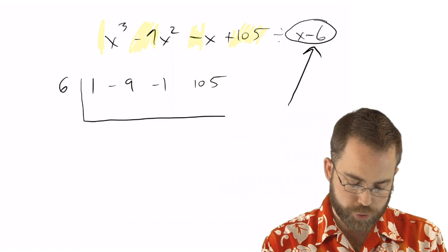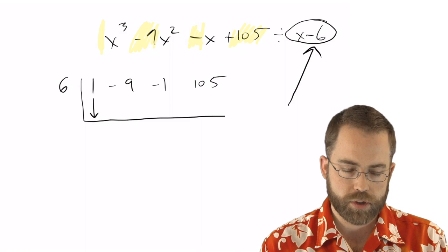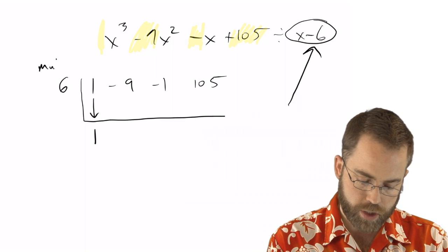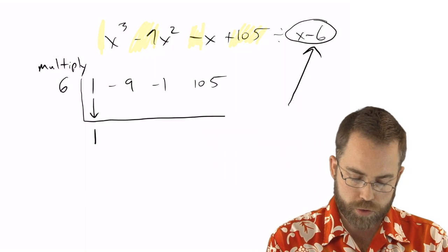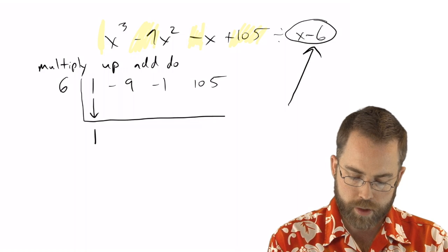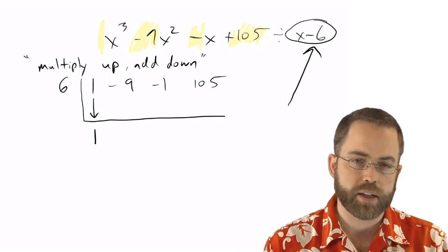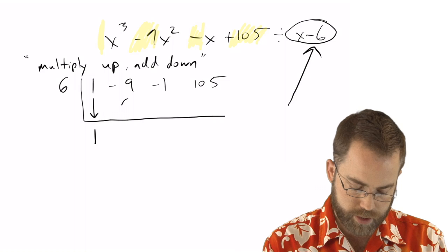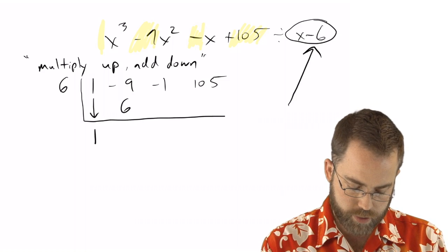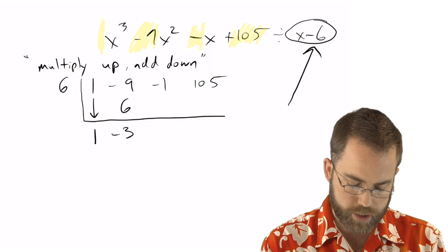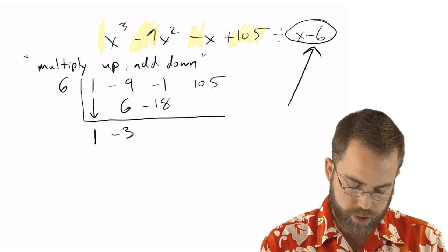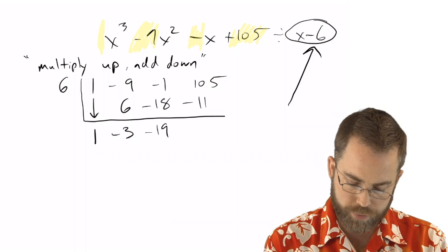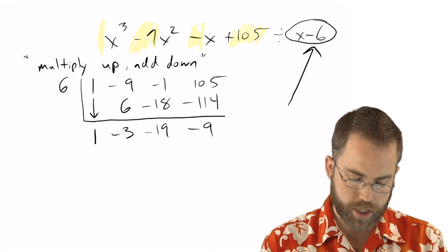So the way this process works is you drop down the first number, it just gets a free pass, and it's 1. And then the pattern over and over again is that we're going to, and you'll hear me say this a lot, multiply up, add down. That this is the mantra for synthetic division. Over and over again, you need to say that. So 6 times 1 is 6. And then add down, you get negative 3. Multiply up, you get negative 18. Add down, you get negative 19. Multiply up, you get negative 114. Add down, you get negative 9.